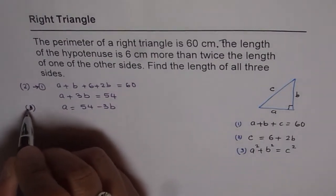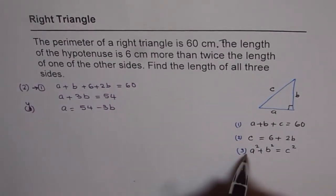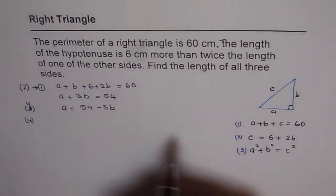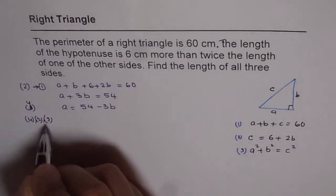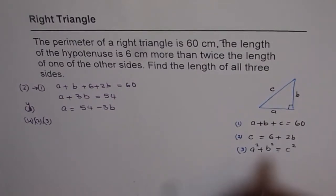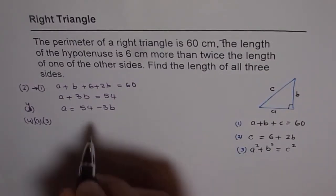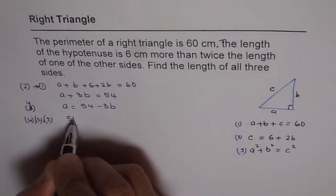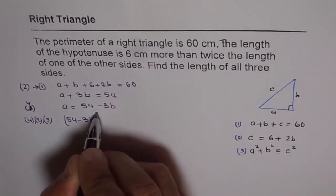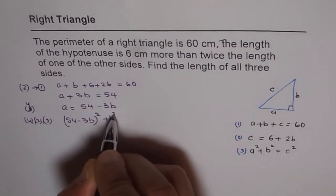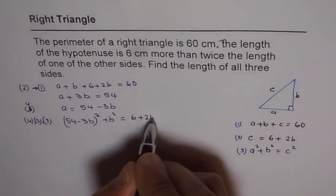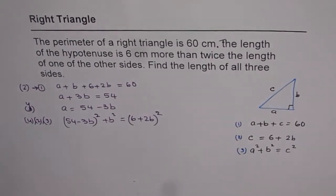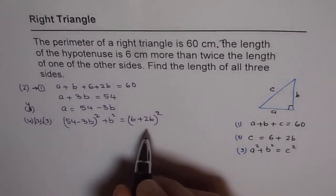Let's substitute 4 and 2 into equation 3. We have a square plus b square equals c square. Instead of a, I will write 54 minus 3b whole square plus b square equals c square and c is 6 plus 2b whole square. Now we have one equation which has only one variable, b. So we can isolate b and find its value.